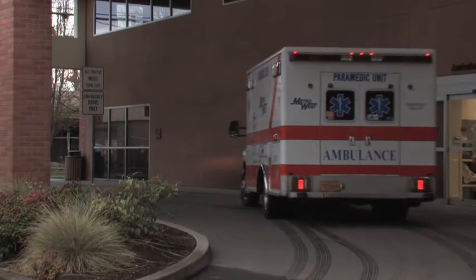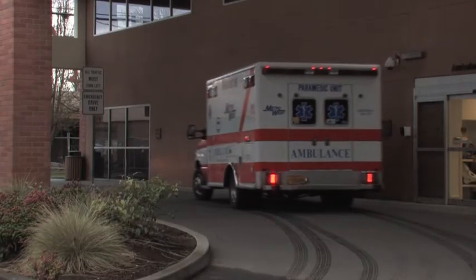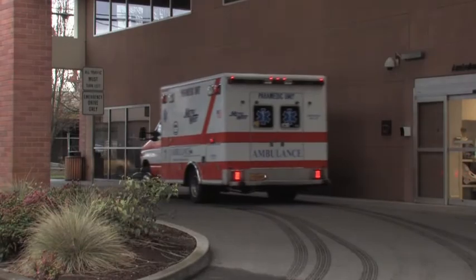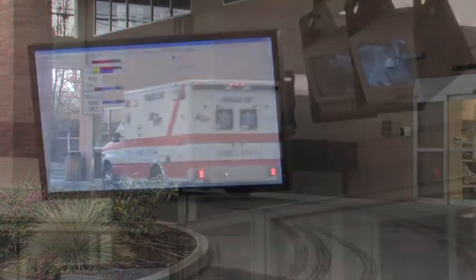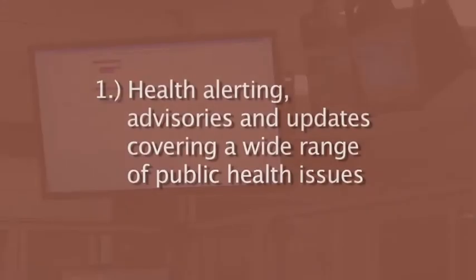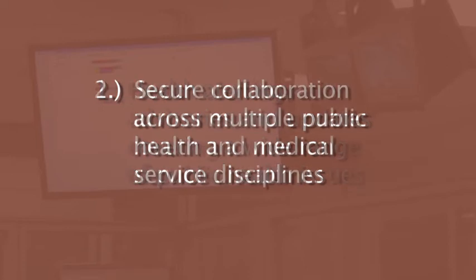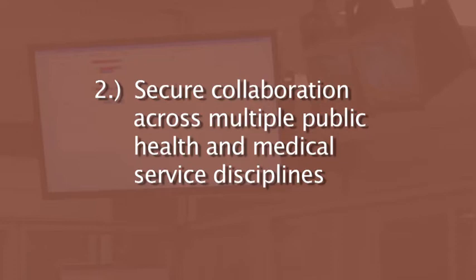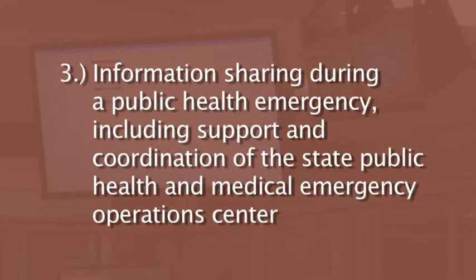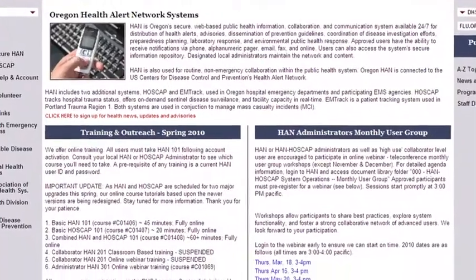The public health system and the health care delivery system are responsible to citizens of Oregon to respond to any and all hazard events. The three major functions of HAN include: One, health alerting, advisories and updates covering a wide range of public health issues. Two, secure collaboration across multiple public health and medical service disciplines. Three, information sharing during a public health emergency, including support and coordination of the state public health and medical emergency operations center.